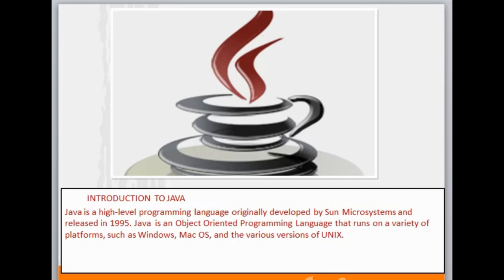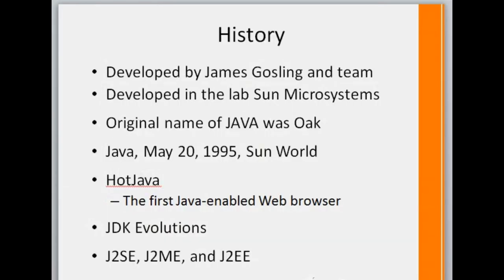Java is an object oriented programming language that runs on a variety of platforms. It can run on Windows, Mac OS, Linux, Unix, etc. So it is a platform independent programming language and it's a very robust programming language.